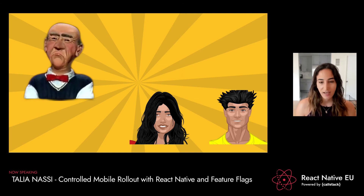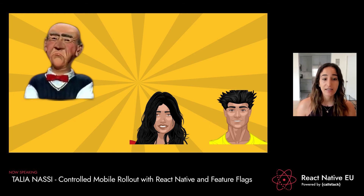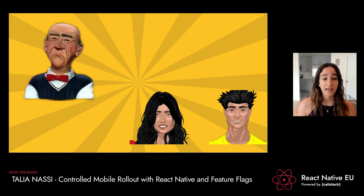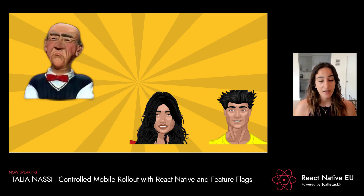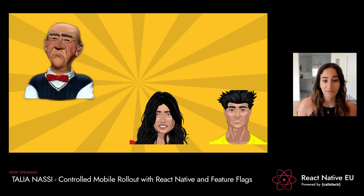Debbie and John have defeated grumpy old dev and they continue to use controlled mobile rollouts with feature flags. This process has increased the entire team's developer velocity. They spend more time creating new features and less time on bugs and defects, because they find these bugs and defects earlier in the process — which also saves the team money, since the earlier you find problems, the cheaper it is to fix.